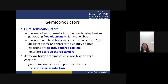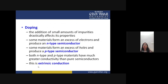Electrons are negative charge carriers and holes are positive charge carriers. A hole is the vacant place left by an electron. Electron has negative charge and hole has positive charge. At room temperature there are few charge carriers — pure semiconductors are poor conductors. Pure semiconductors are called intrinsic semiconductors. Their conductivity is very small — only micro-ampere currents can flow by applying thermal energy.